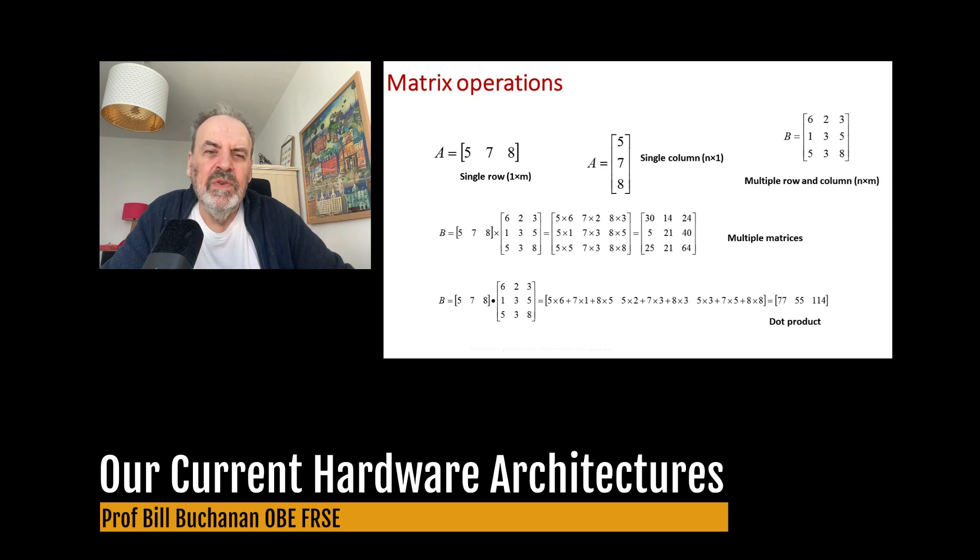For a CPU to multiply two matrices together involves a great deal of code which could be more efficiently computed with specialized hardware that is optimized for operating on matrices.